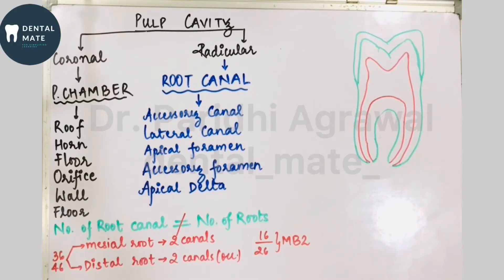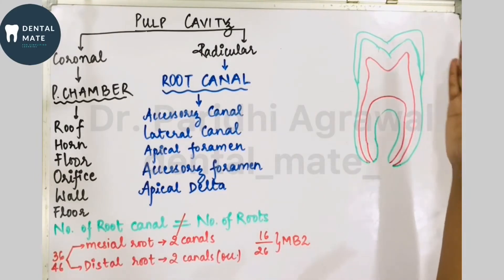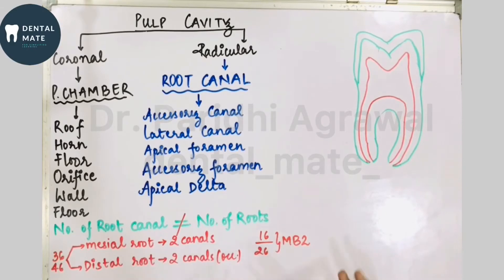In this video, first of all we'll be discussing the anatomy of the pulp cavity. It is very important to understand the basic structure of the tooth, the various terminologies used, their significance — and then only you'll be able to understand how the root canal procedure is performed. Root canal treatment is often carried out when the carious lesion has proceeded to the pulp, which is the only vital tissue of the tooth.